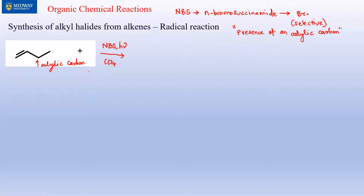It's like a McLaren F1 or a LaFerrari — those tires and wheels are specifically made for that particular model and not for any other vehicle. Similarly, an allylic carbon is a must for NBS and light to work. We're producing one Br• — many of them, but one equivalent each.